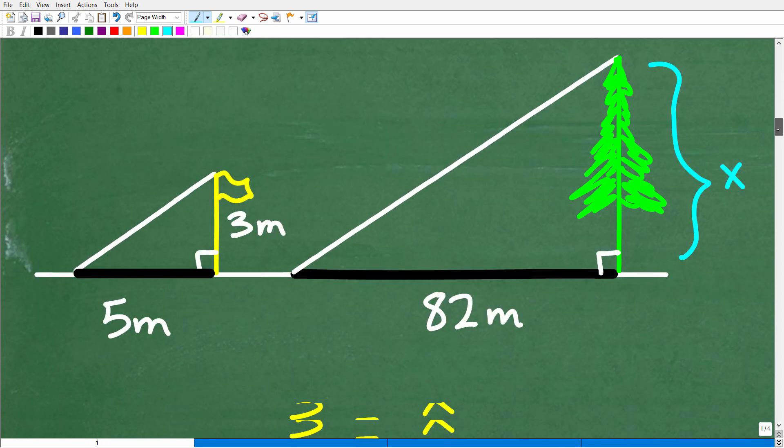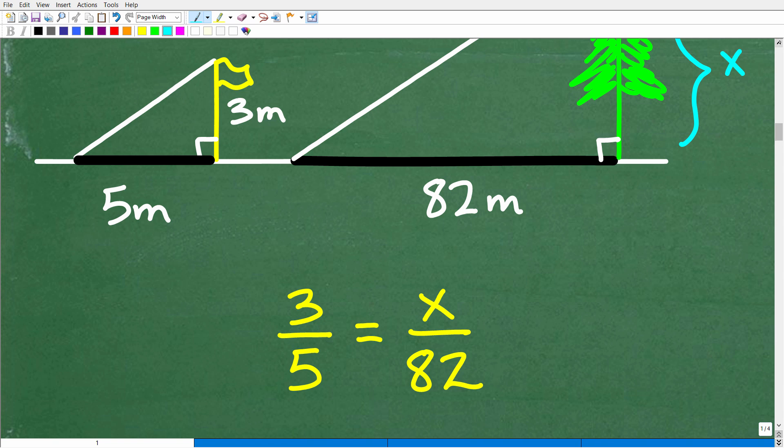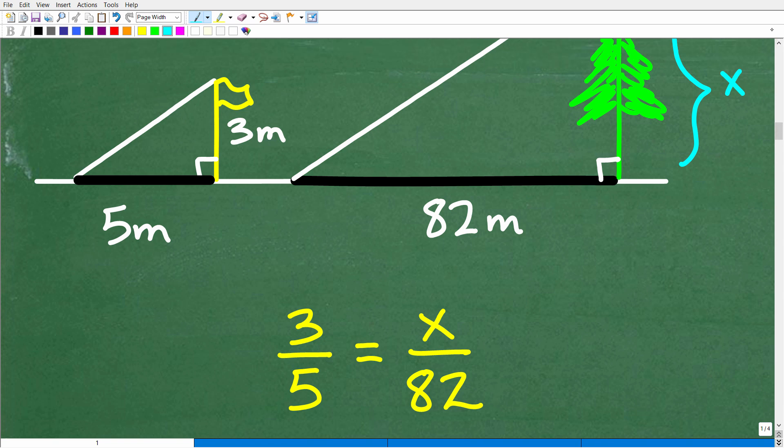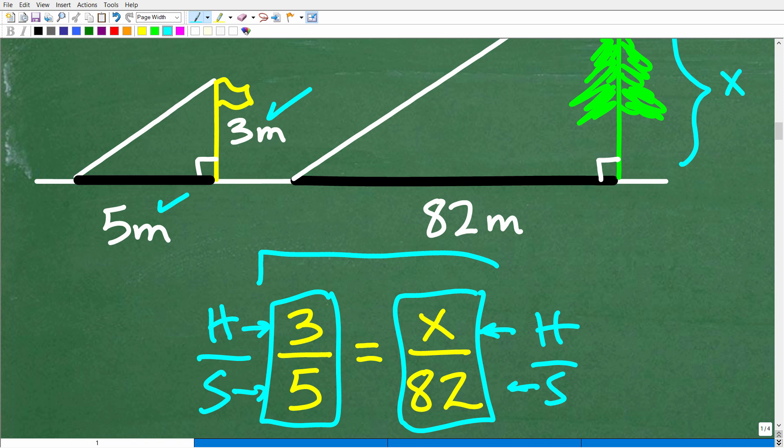Now that we understand what's going on, we can set up this proportion right here. We have to be very careful that we are establishing the same ratios. In other words, the height to the shadow. You can do it from the shadow to the height. That's fine. But I think it's just easier to have the height. We're comparing the height to its shadow and the height to its shadow over here. So this is the tree. We don't know the height of the tree, but we know the length of the shadow is 82. We know the height of the flagpole is 3, and we know its shadow is 5. So this ratio and this ratio here are going to be the same. They're going to be proportional.